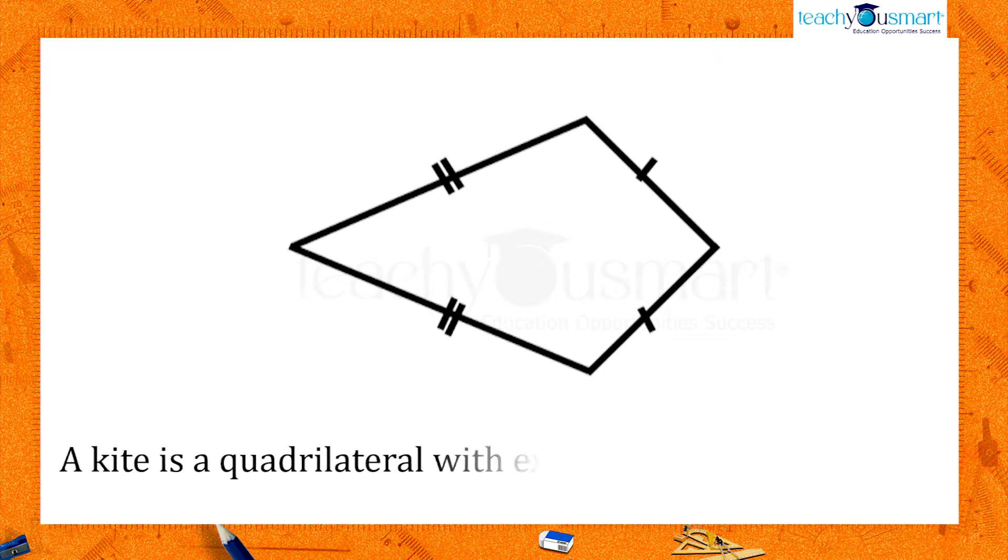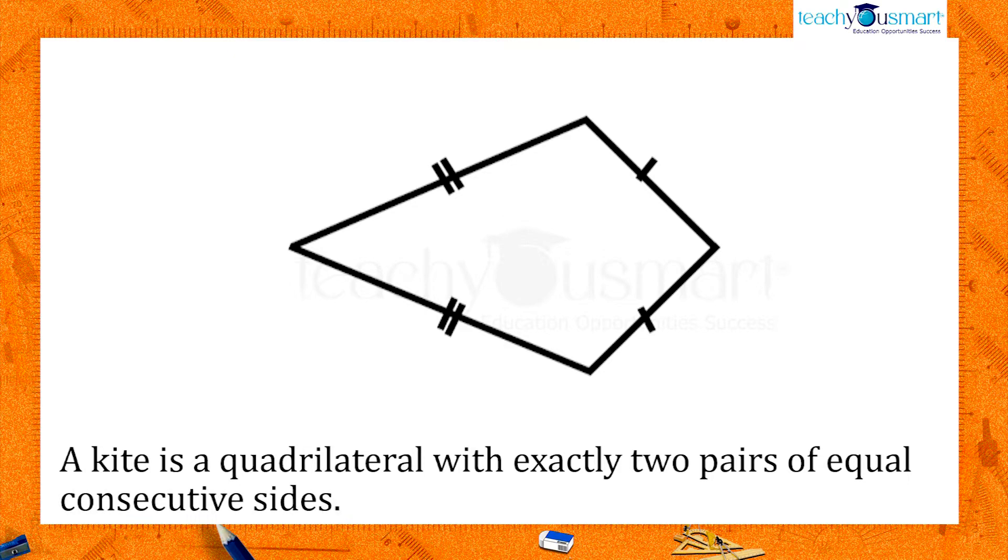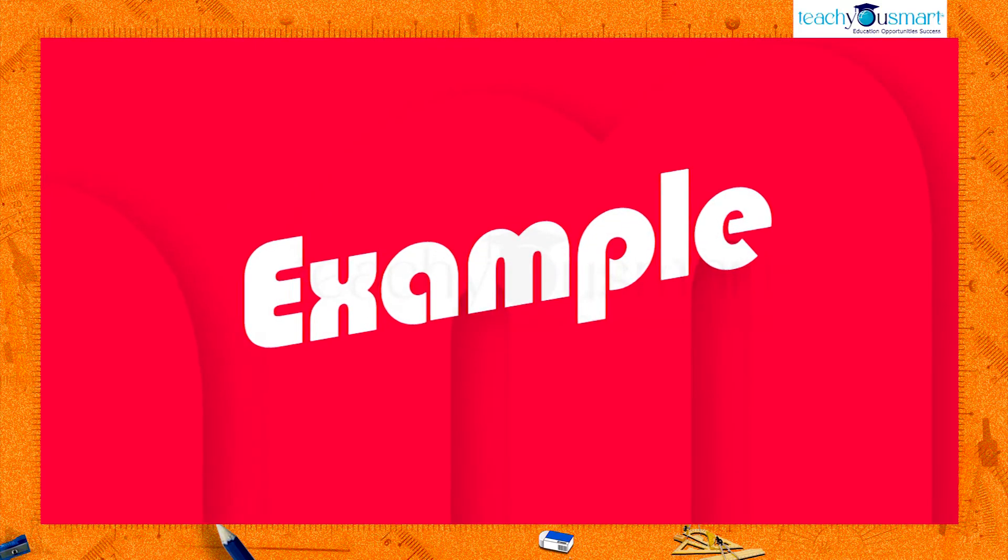We know that a kite is a quadrilateral with exactly two pairs of equal consecutive sides. Using this definition, we can construct a kite. Let's illustrate through an example.